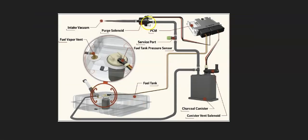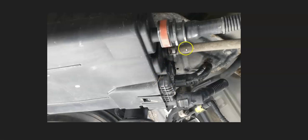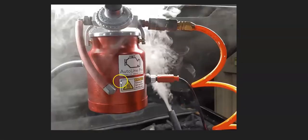If you've checked the gas cap, the purge valve, the charcoal canister, and the vent valve, and everything looks good, then very likely there's a leak somewhere in one of the hoses. These leaks can be kind of hard to spot sometimes. You can go around and check all the hoses for anything broken or cracked, and sometimes you can spot them, but quite often they're difficult to find.